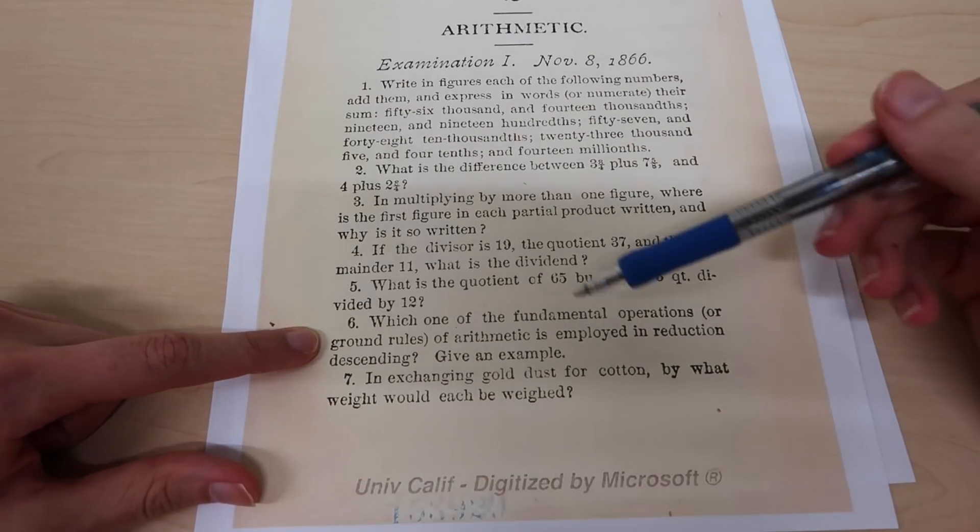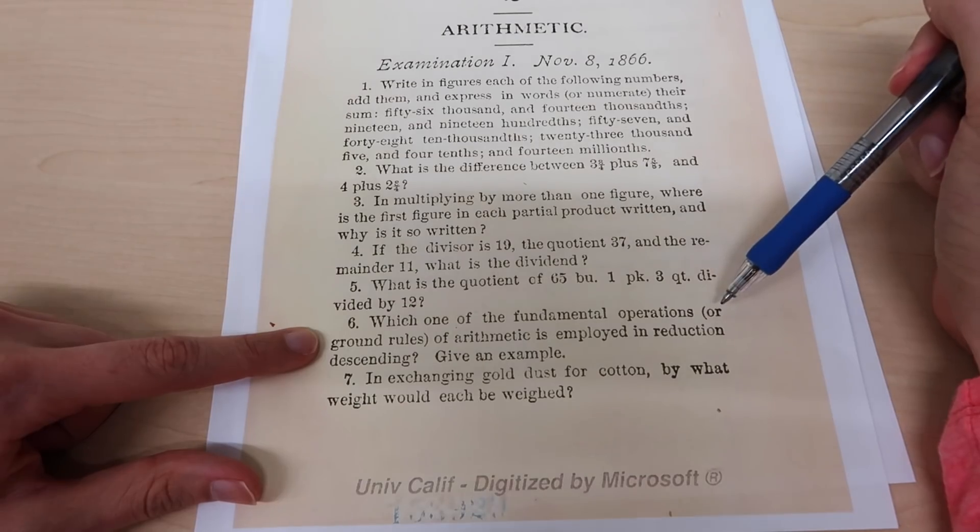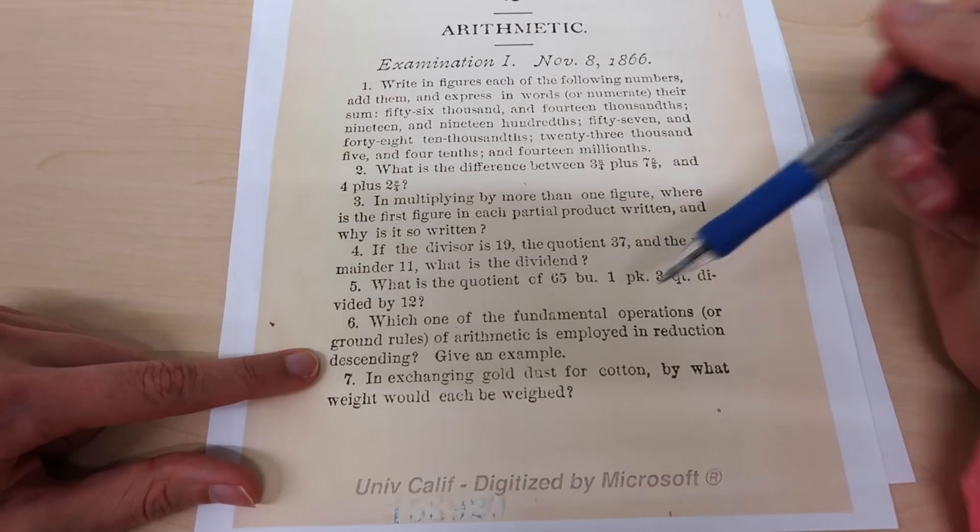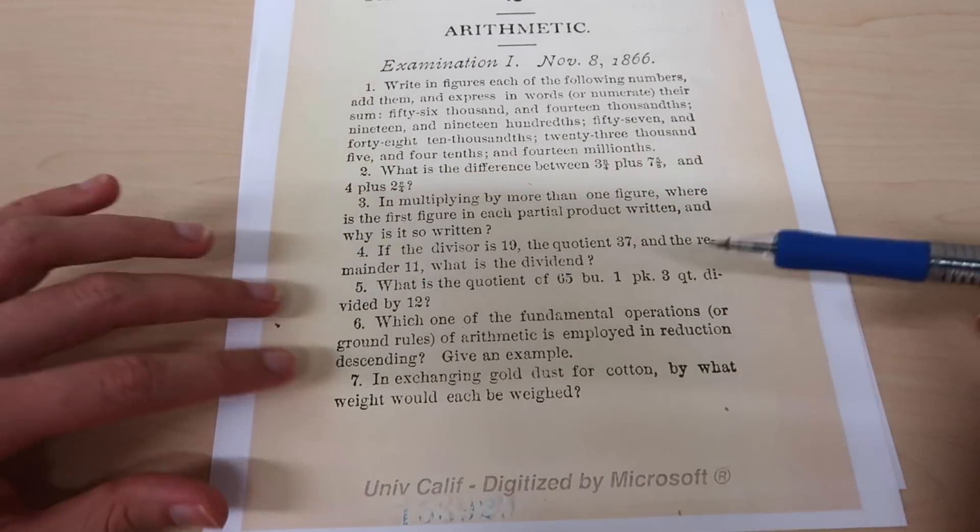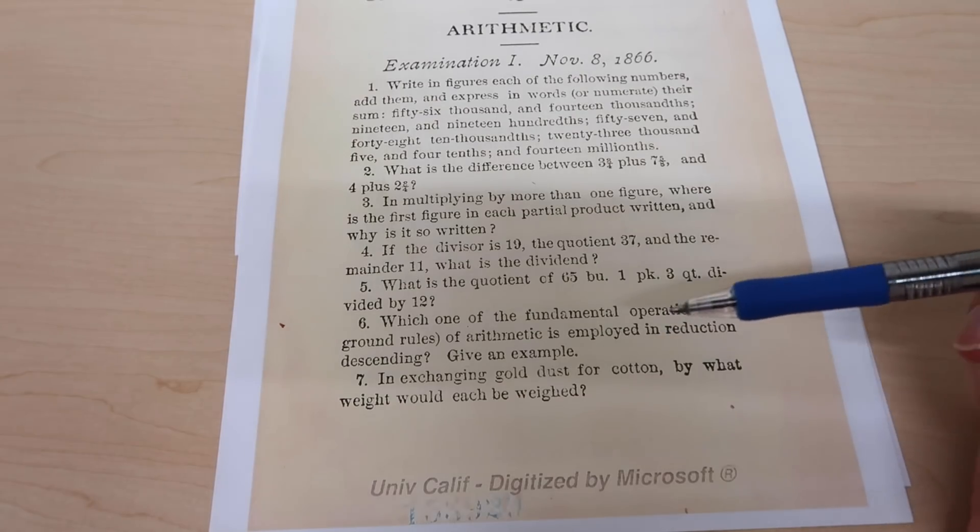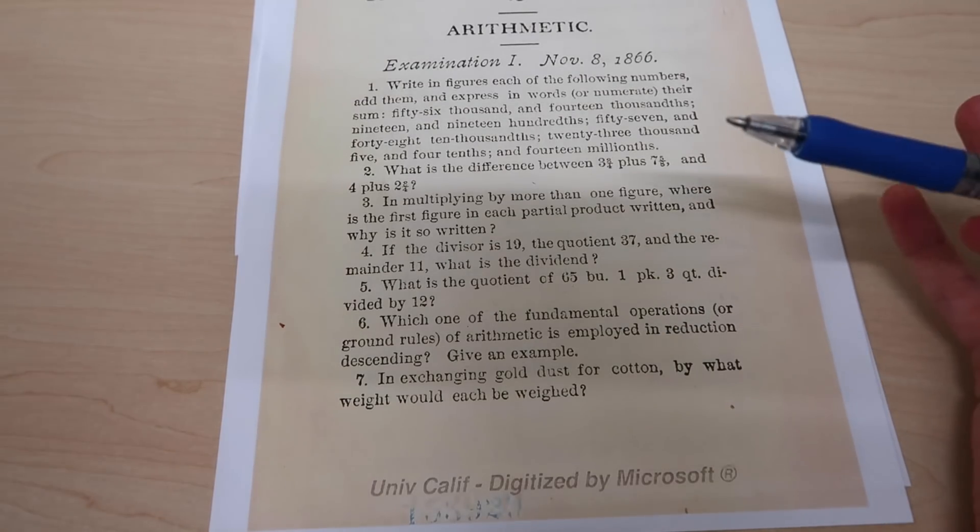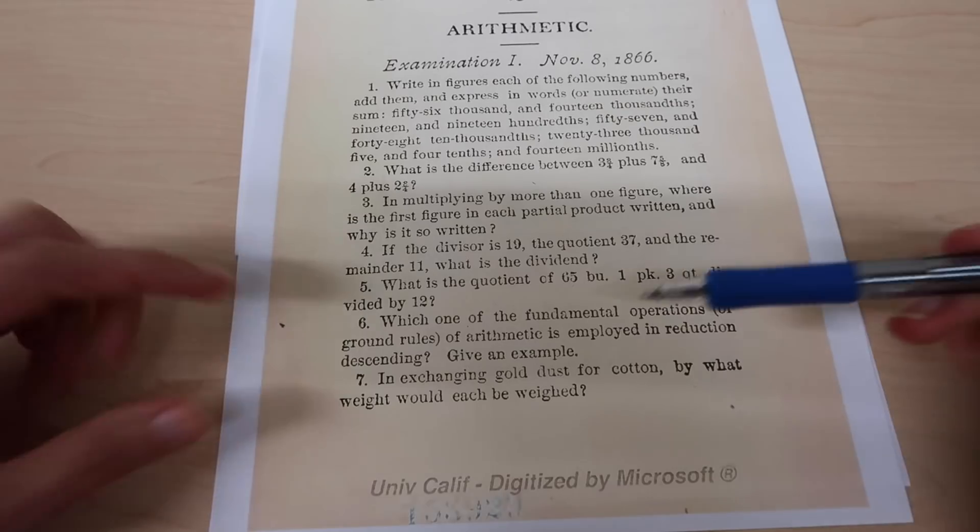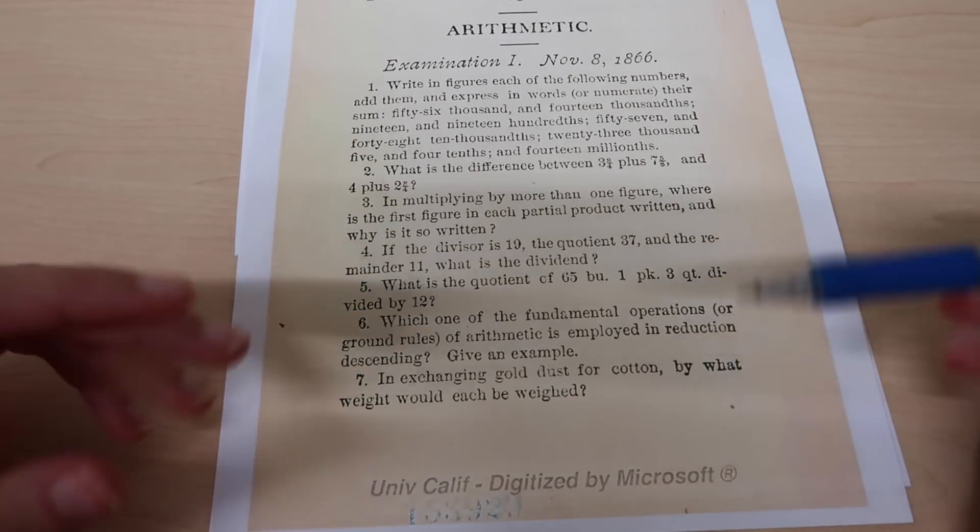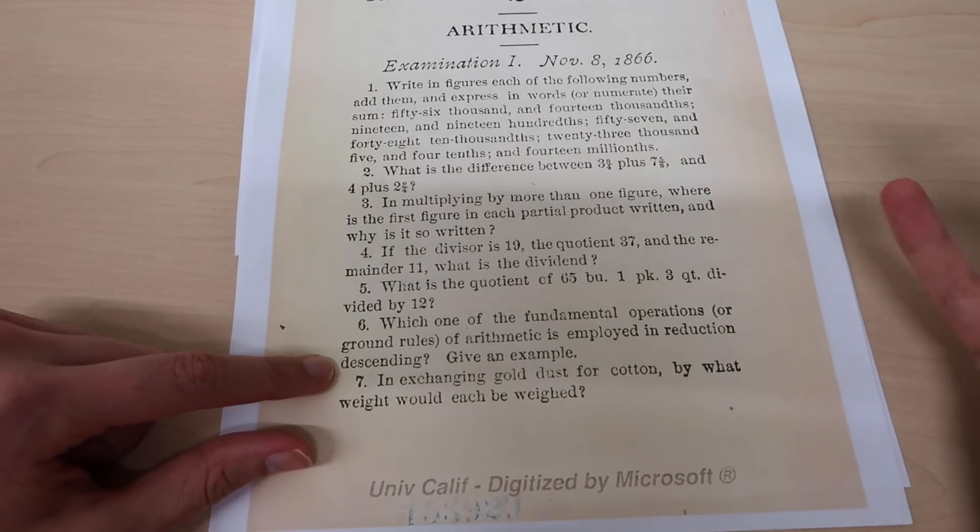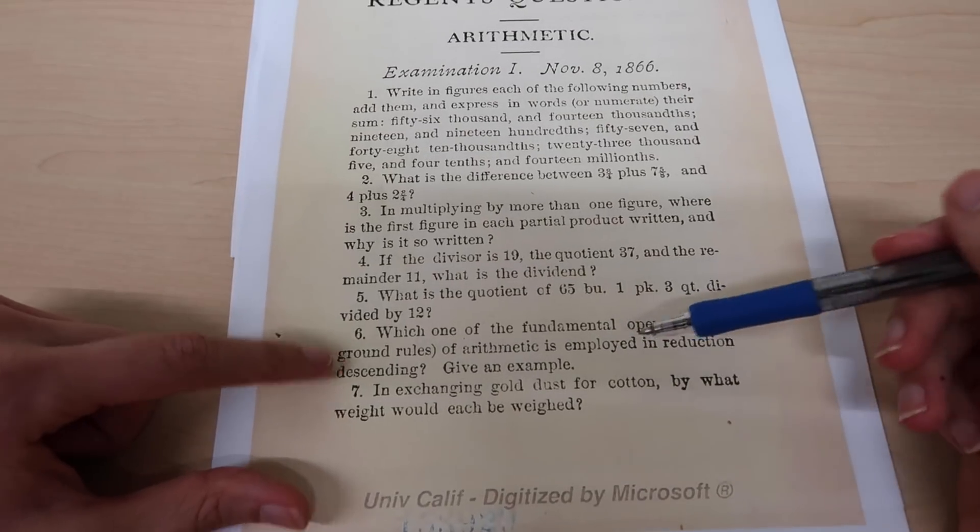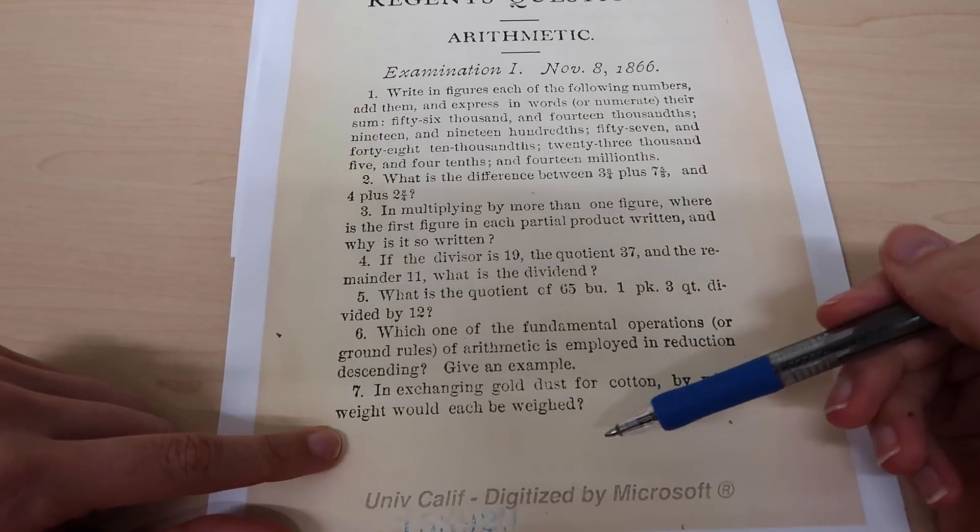Number six: which of the fundamental operations or ground rules of arithmetic is employed in reduction descending? Initially I had no idea what reduction descending is, but I gave this one a quick google as well and I think it refers to when you're going down in denomination, like if you have dollars and you want to convert it into cents. If I had a dollar and I want to tell how many cents was in it, I would times it by a hundred, so I believe this one would be multiplication.